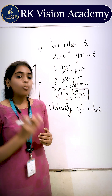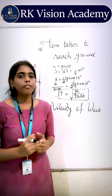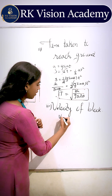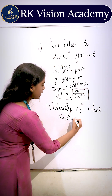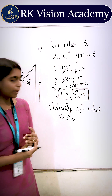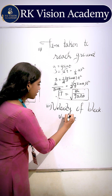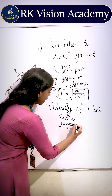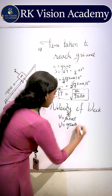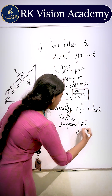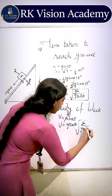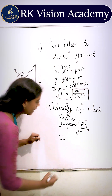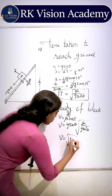Now, let us find the velocity of the block when it reaches the ground. We use the equation v = u + at. The initial velocity is zero, so the final velocity will be g sin theta multiplied by the total time, which is root of 2h by g sin²theta. Simplifying this, our final velocity will be root of 2gh.